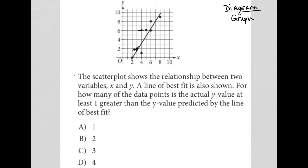This one here is also above, but it looks like that's exactly one greater than where the prediction would be. The prediction would be on the line, but it looks like that point is exactly one above. So, that's one.